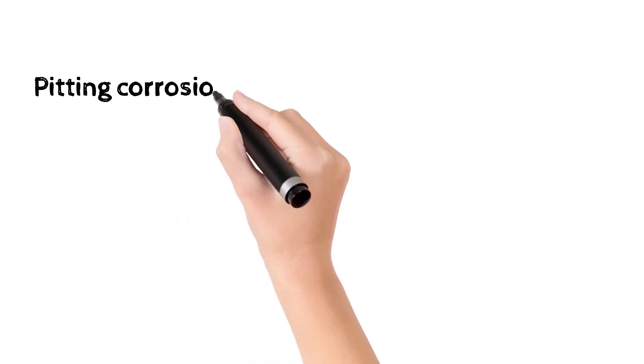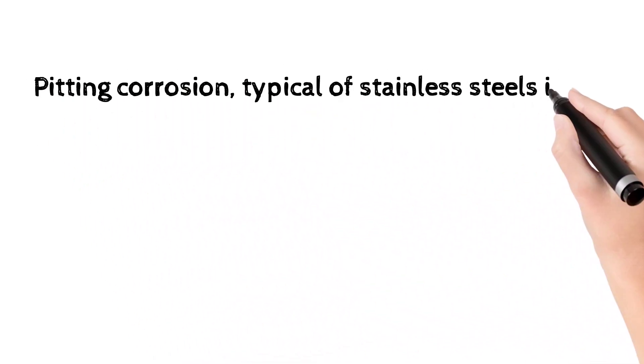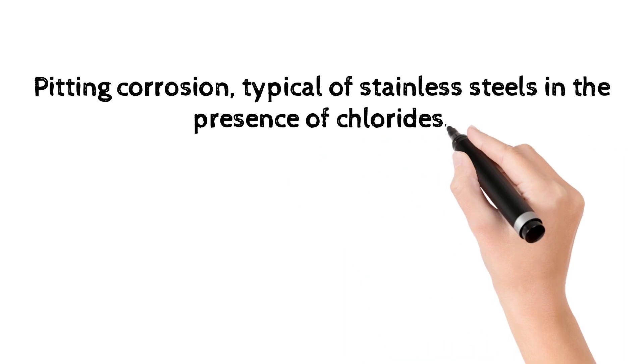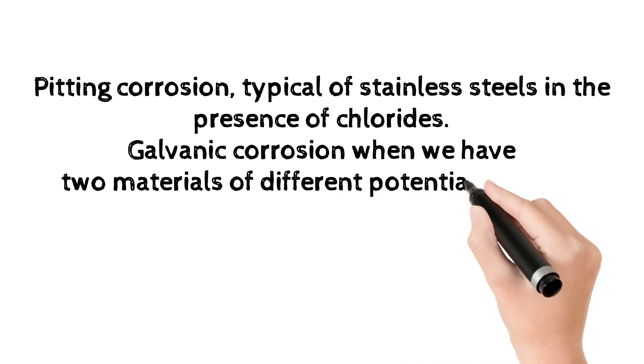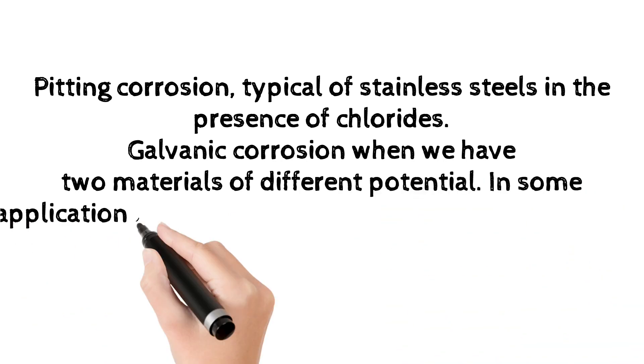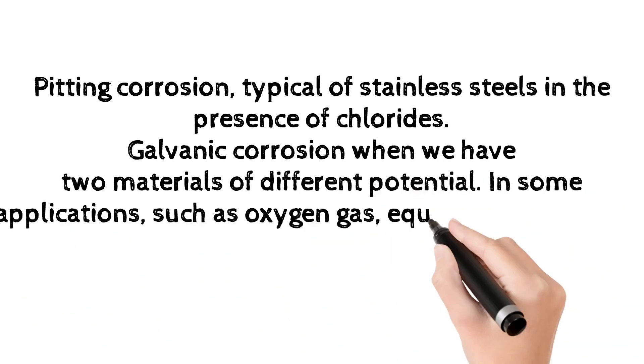Pitting corrosion, typical of stainless steels in the presence of chlorides. Galvanic corrosion when we have two materials of different potential. In some applications, such as oxygen gas, equipotential bonding is used.